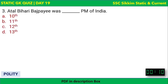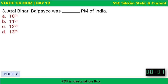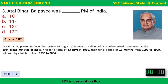Next question: Atal Bihari Vajpayee was the dash PM of India. The answer is the 10th Prime Minister. He served three terms: first in 1996 for 13 days, then from 1998 to 1999 for a period of 13 months, and finally a full term from 1999 to 2004.